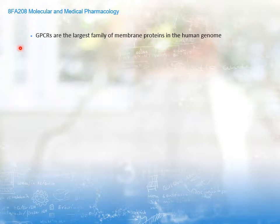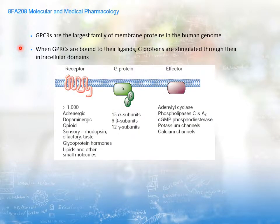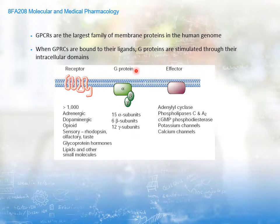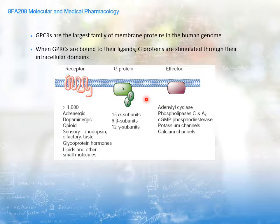GPCRs, G protein coupled receptors, are the largest family of membrane proteins in the human genome — a very important protein family. When they are bound to their ligands, G proteins are stimulated through the intracellular domains. Essentially, the receptor binds its ligand, and this interaction results in activation of the heterotrimeric G proteins — heterotrimeric because they consist of three subunits: alpha, beta, and gamma — which, when they dissociate, trigger intracellular effects, either via different options, the most common being adenylyl cyclase and the formation of cyclic AMP.